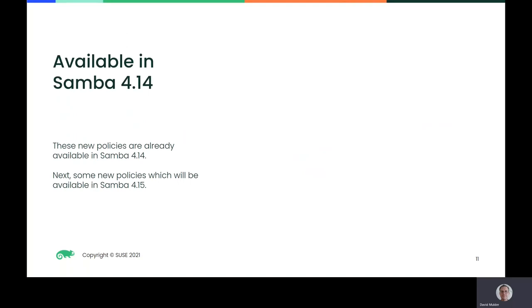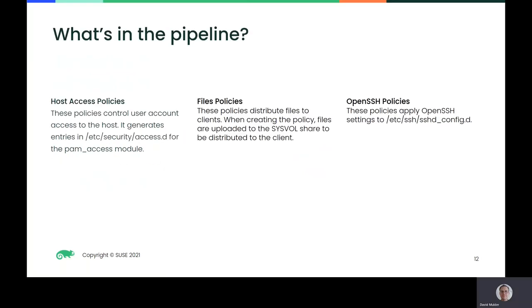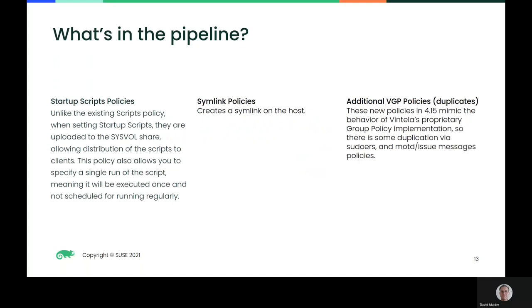Next, I'll introduce some policies coming available in Samba 4.15. Host access policies control user account access to the host, generating entries in /etc/security/access.d for the PAM access module. Files policies distribute files to clients — when creating the policy, files are uploaded to the SysVol share to be distributed to the client. OpenSSH policies apply OpenSSH settings to /etc/ssh/sshd_config.d. Unlike the existing scripts policy, startup scripts are uploaded to the SysVol share, allowing distribution to clients. This policy also allows you to specify a single run of the script, meaning it could be executed once and not scheduled for running regularly.